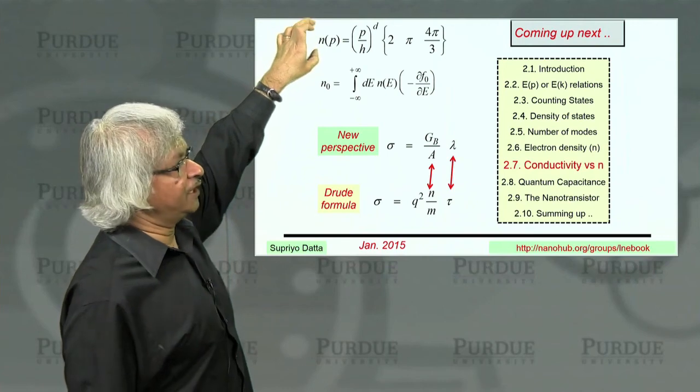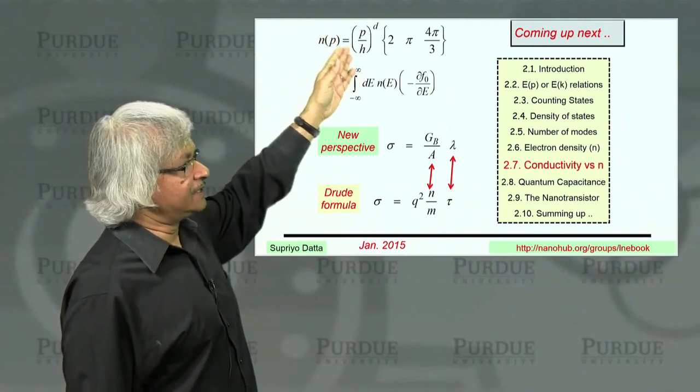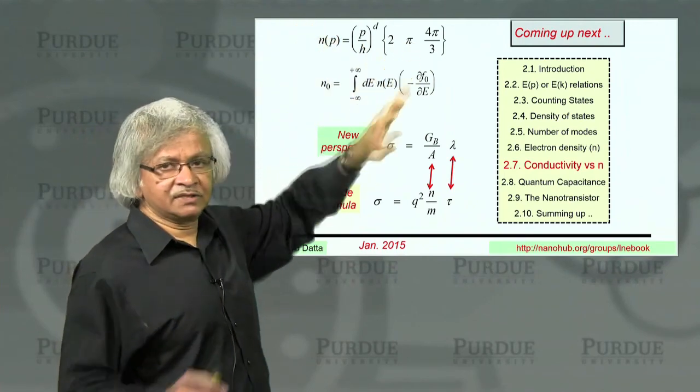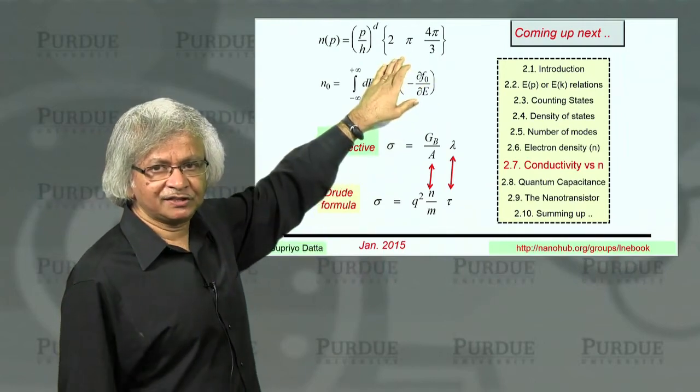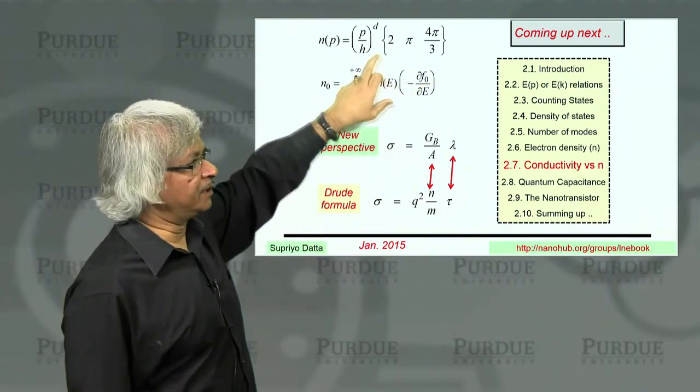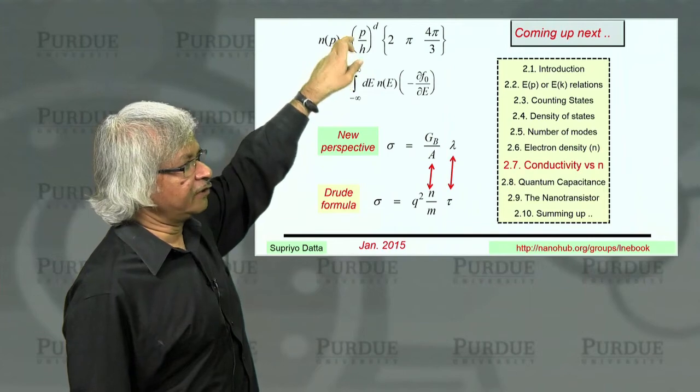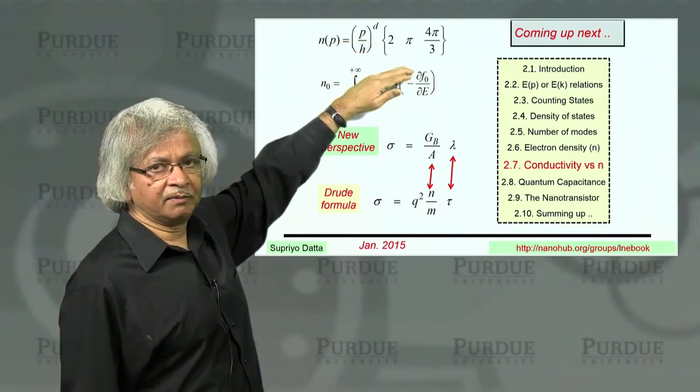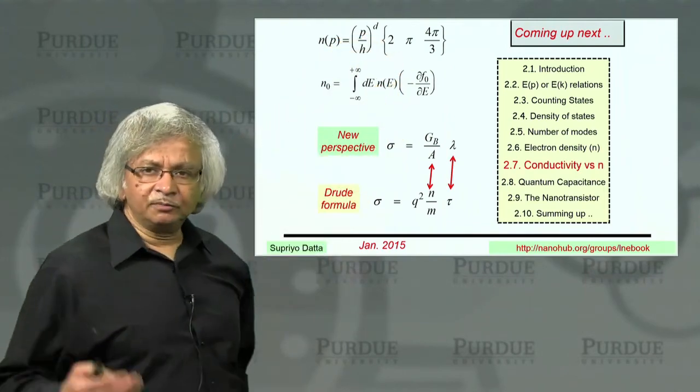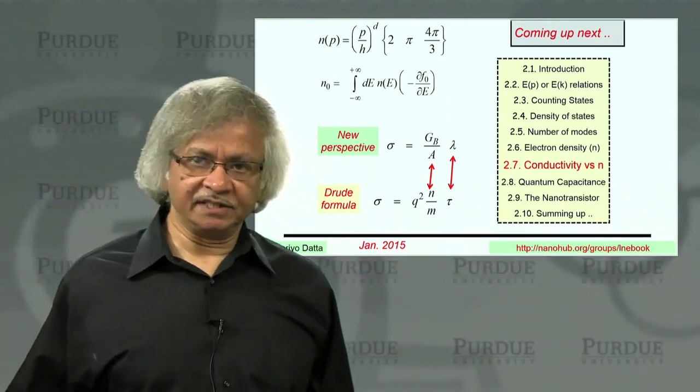Anyway, so I guess what we have showed here is that this N of P that comes simply from counting states, no energy momentum relation involved, you could combine it with the energy momentum relation to get an N of E, and that would be like the electron density.